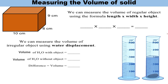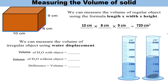Now measuring the volume of a solid: we can measure the volume of a regular object using the formula length × width × height. For example, if a cuboid has length 10 cm, width 8 cm and height 9 cm, its volume is 720 centimeter cube. For a cube it is side³, and for a sphere the relevant formula applies. So for regular objects we can find their volume using formulas.